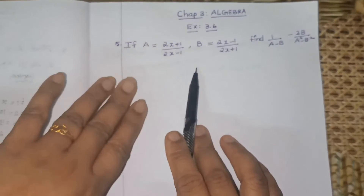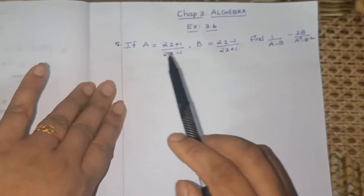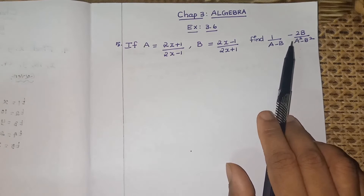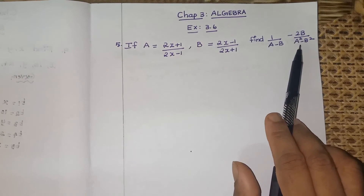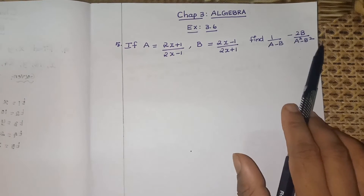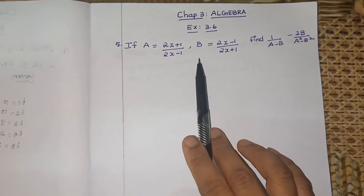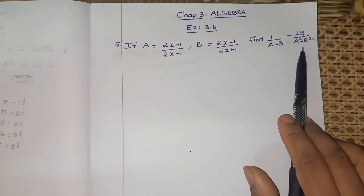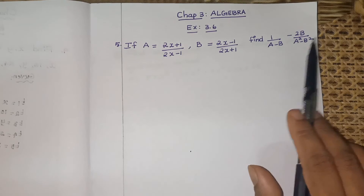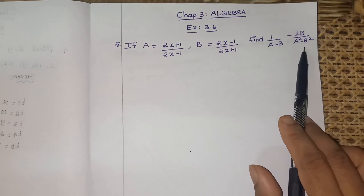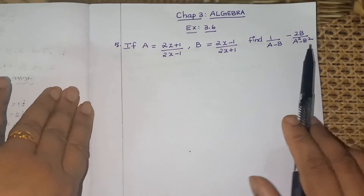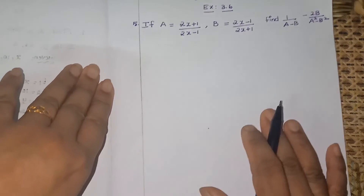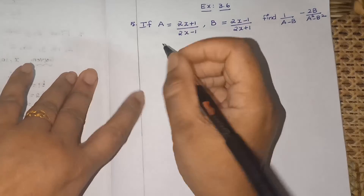When you see this type of sum, please don't apply the values of A and B directly — don't make that mistake. First look at the question: you can use an identity here, you can replace A²-B². Simplify the question first, then apply the value.